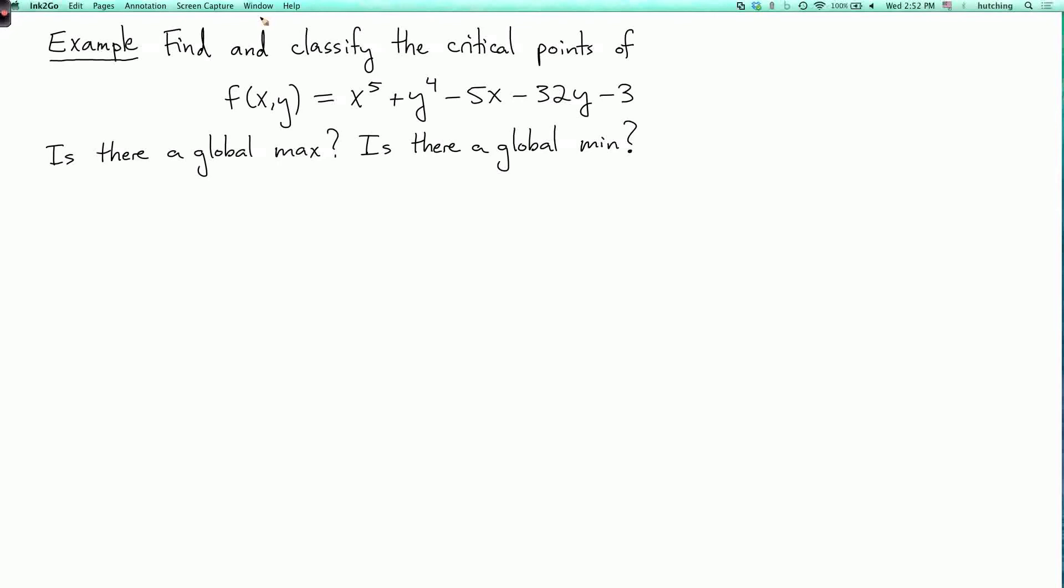Here's a slightly more complicated example involving the second derivative test. The problem is to find all of the critical points of the function f(x,y) equals x to the fifth plus y to the fourth minus 5x minus 32y minus 3.